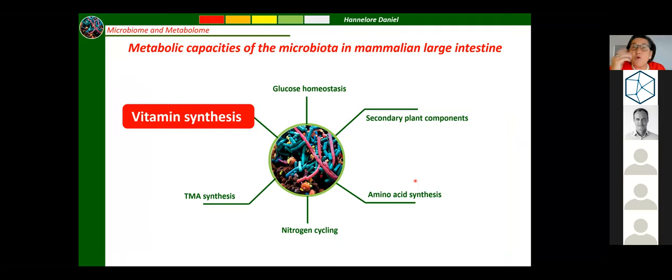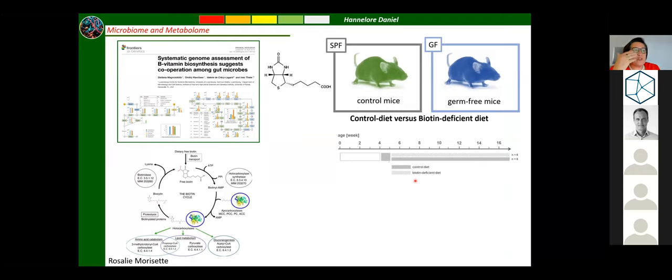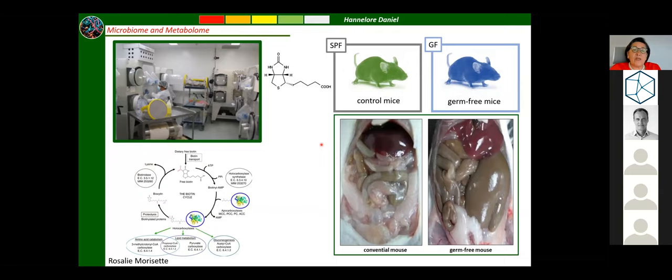You quite frequently read that vitamins are produced by bacteria in the large intestine. The key question is whether those vitamins are bioavailable. I'll show an experiment we did in the TUM gnotobiotic facility using a biotin-deficient diet in control mice and germ-free mice. In germ-free mice, no biotin would be produced by the microbiome. We used these animals to study enzymes that require biotin — the carboxylases — looking at breakdown products of branched-chain amino acids.